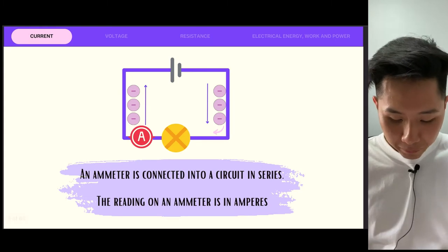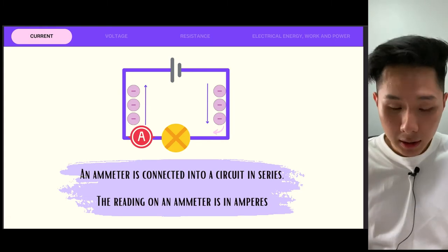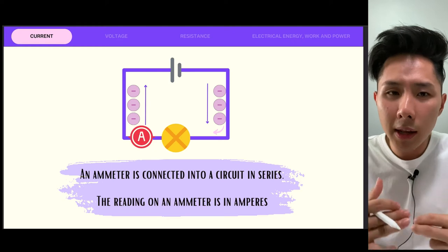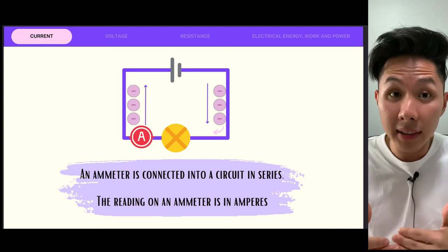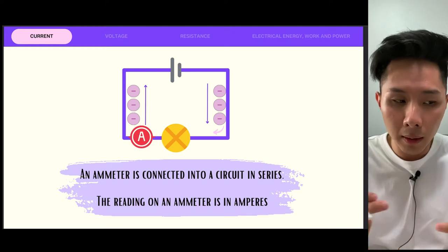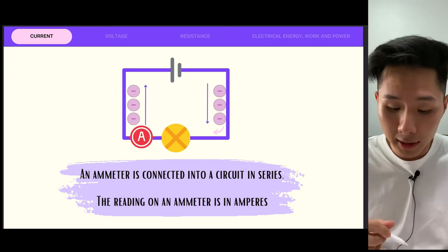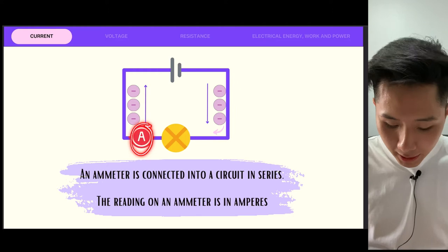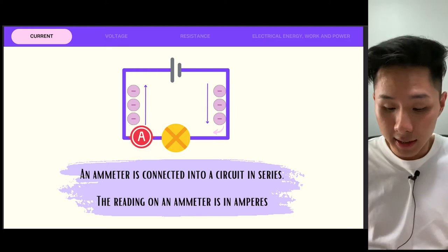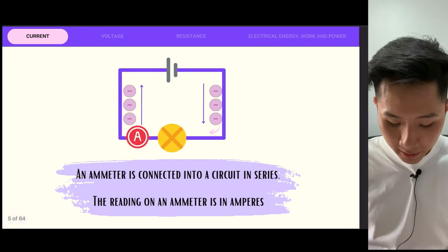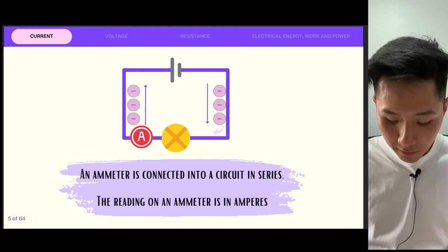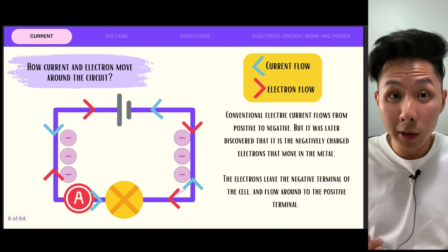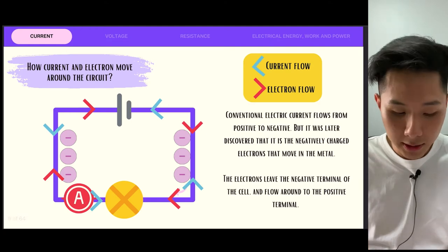An ammeter is often connected in series. You will learn about the voltmeter later — the voltmeter is connected in parallel, but an ammeter has to be connected in series. The readings of an ammeter are in amperes, which is also the unit for current.